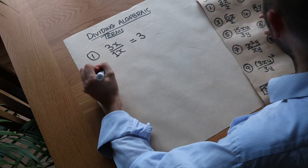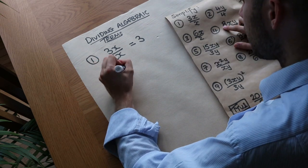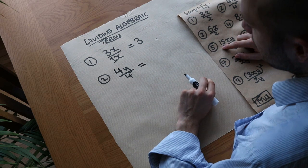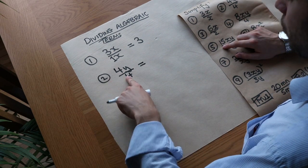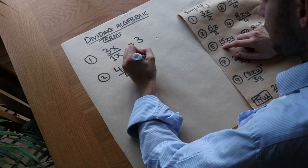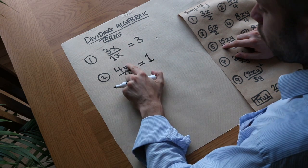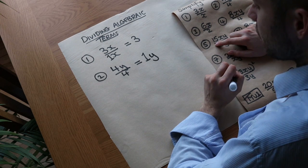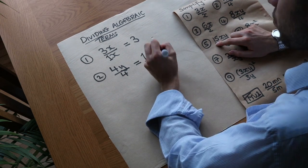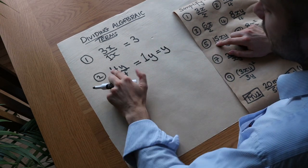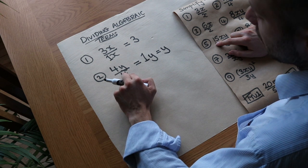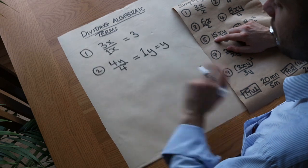What about the next one? We've got 4y divided by 4, so let's do this more quickly this time. We first do the number terms divided by each other, 4 divided by 4 is just 1. We'll put 1 there and then y divided by, we haven't got anything there, so we still have that y there. So we just have one y or we could just write that as y. And that sort of makes sense, if you have four lots of y and you split it into 4 then each person would get one lot of y, so you just have y.